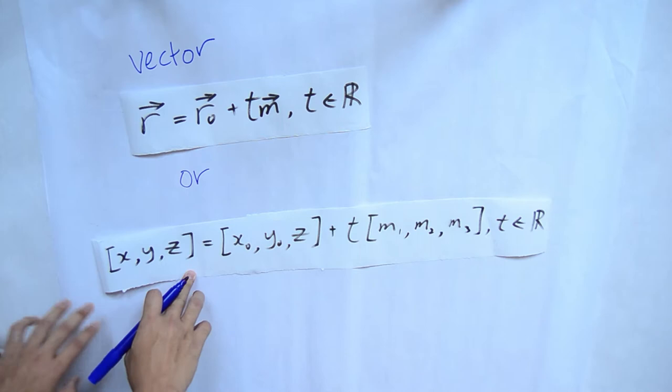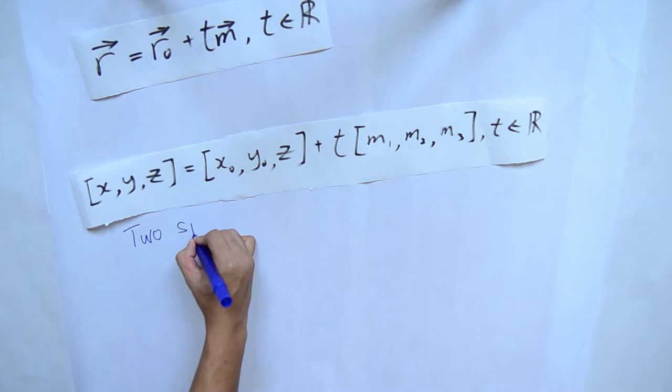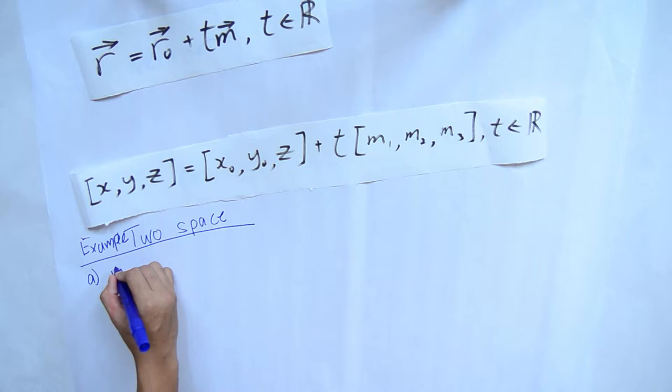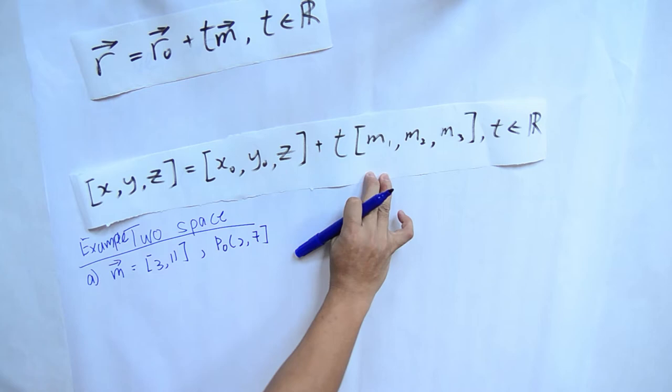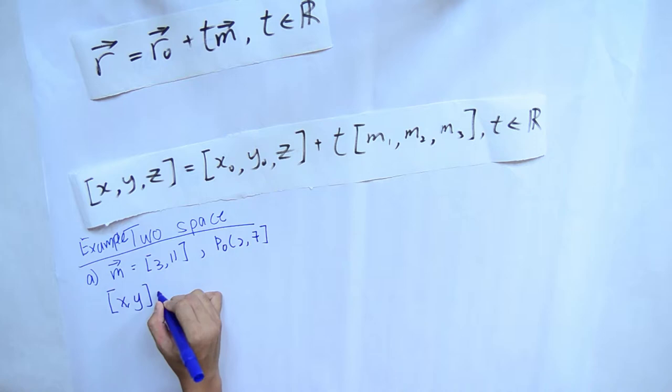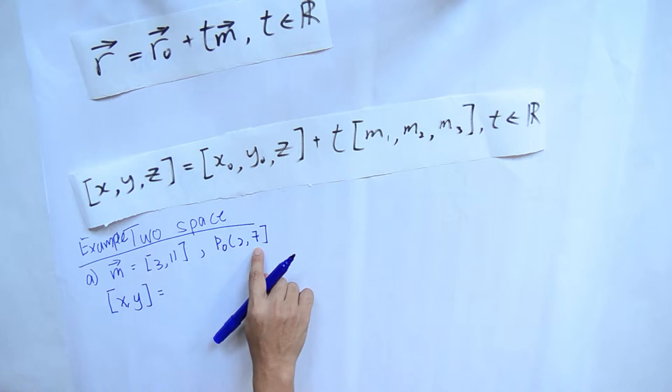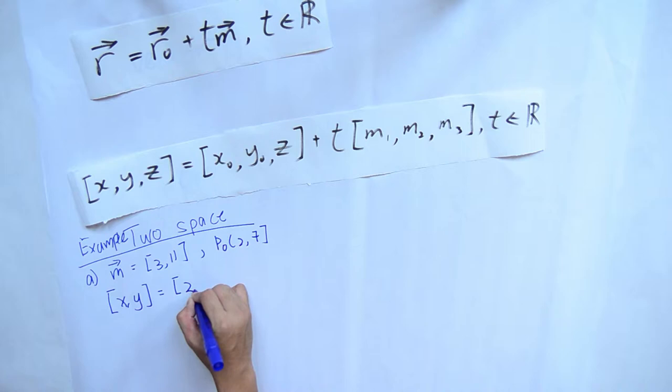This is an example of two-space. It is given that m equals bracket 3, 11 and p0 equals bracket 2, 7. Using the vector equation, we write x, y equals bracket 2, 7 plus t bracket 3, 11. This is the final answer of the vector equation.